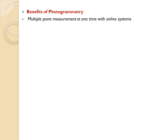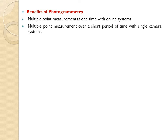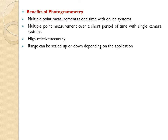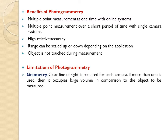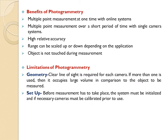The benefits of photogrammetry include multi-point measurement at one time with online systems, multiple point measurement over a short period with single camera systems, high relative accuracy, and range can be scaled up or down depending on the application. The object will not be touched during measurement, which is a major advantage. Limitations include that a clear line of sight is required for each camera; if more than one is used it occupies a large volume relative to the object — a geometry limitation. The system must be initialized and cameras calibrated prior to use — a setup limitation.